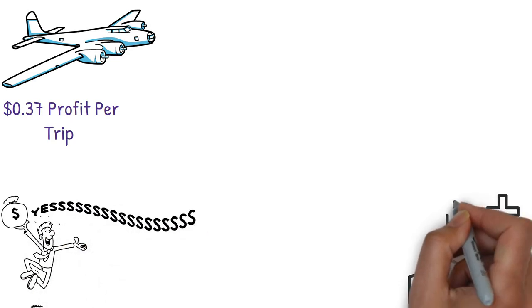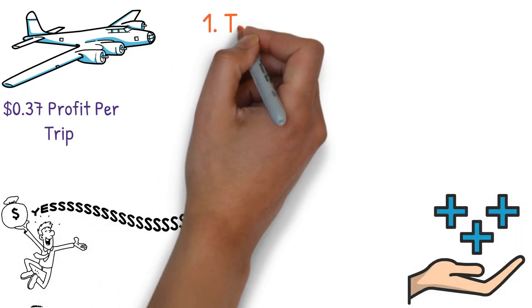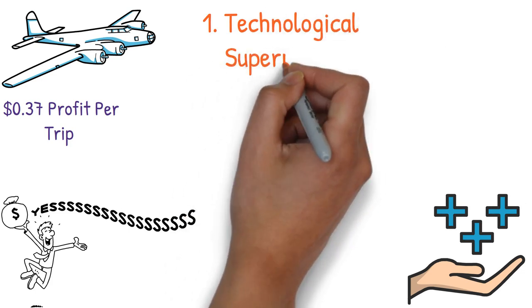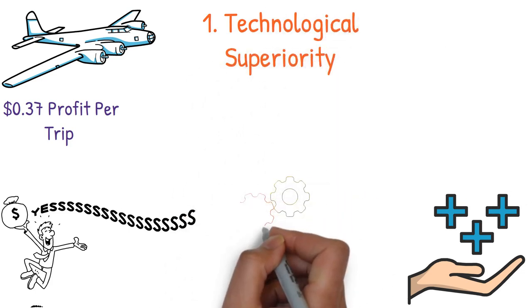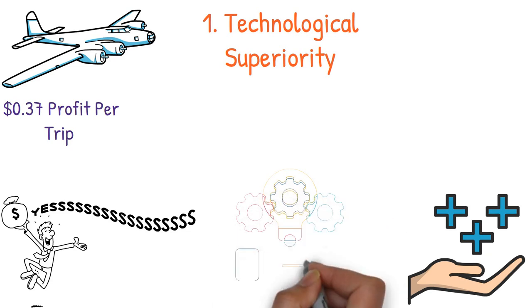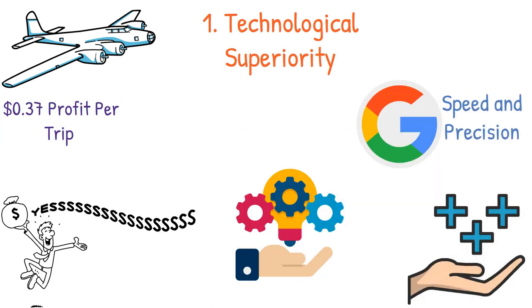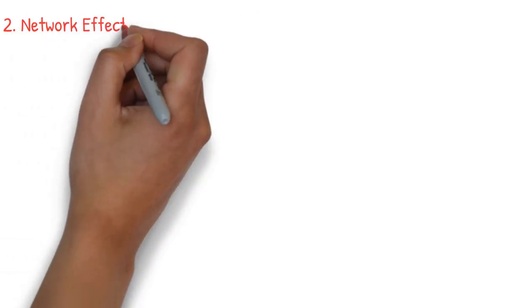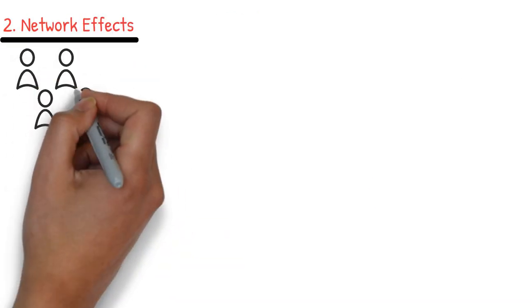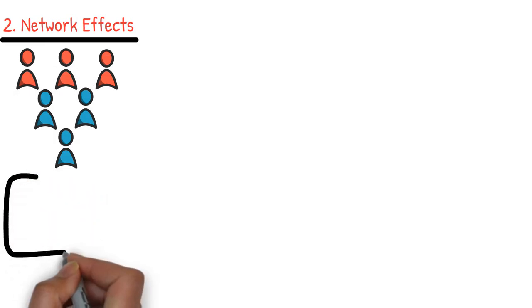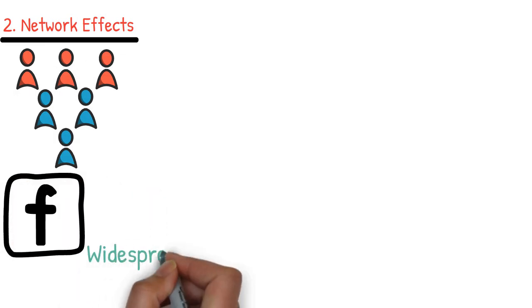Monopolies offer societal and corporate advantages. One, technological superiority. Their technology significantly outpaces rivals. Google's algorithms, for instance, far exceed competitors in speed and precision. Two, network effects. Their value increases with user numbers. Facebook's utility, for example, hinges on its widespread adoption.